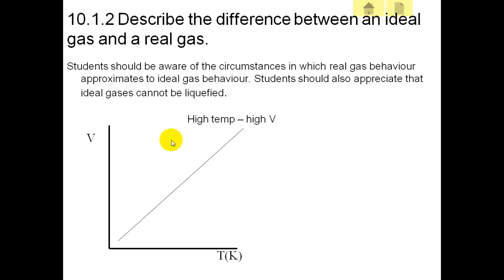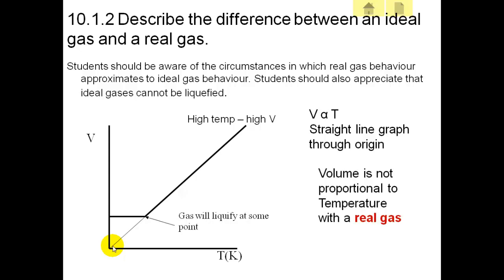Now a graph of V against T using the ideal gas equation is the volume is proportional to the temperature. V is proportional to T for a straight line graph through the origin. This is proportionality. But you know that in a real gas when it gets to a certain temperature it will turn into a liquid. And this dark line here is the behavior of a real gas, not of an ideal gas. An ideal gas would just be proportional, would just go straight to zero. So a real gas will liquefy at some point when the temperature is cold enough. In other words, the volume is not proportional to the temperature with a real gas.